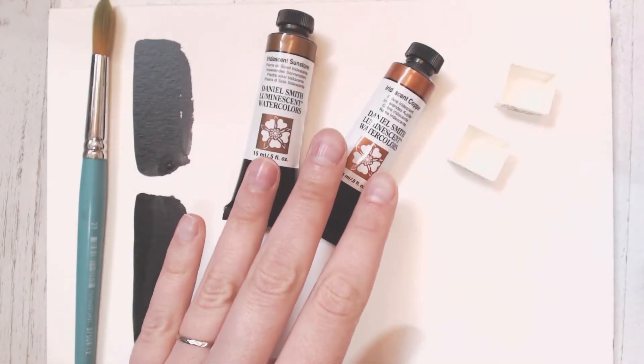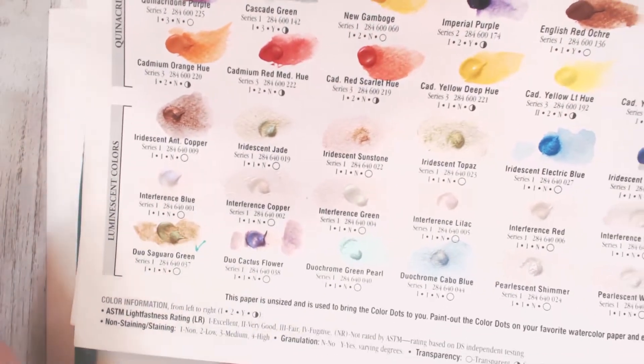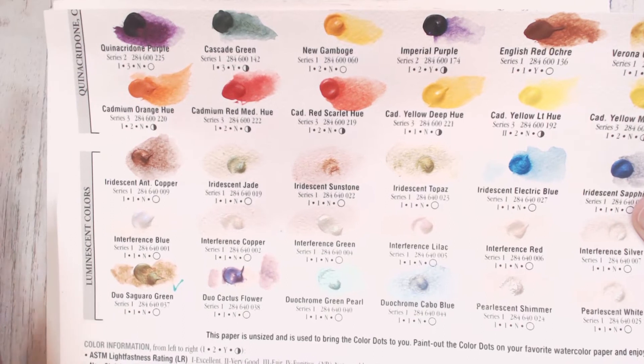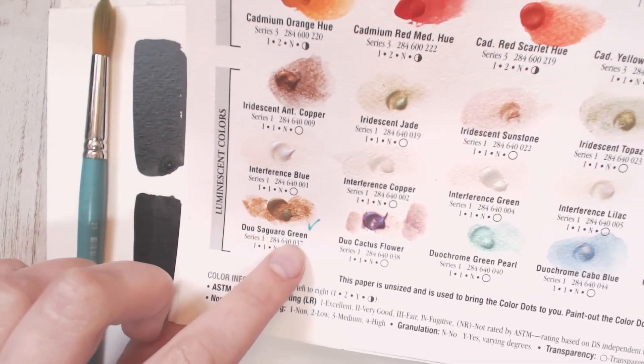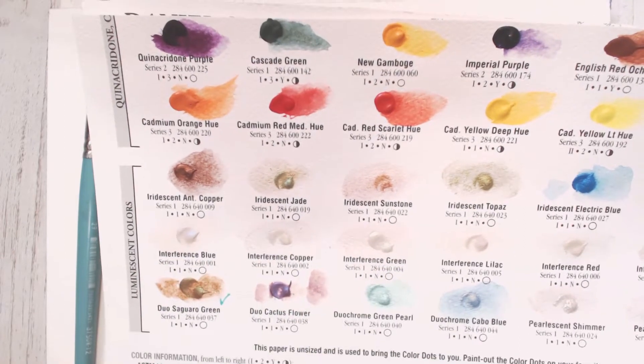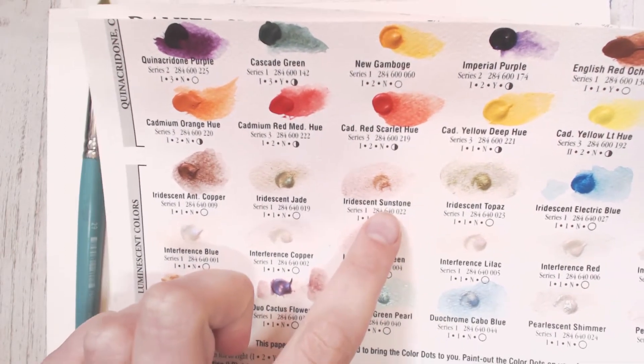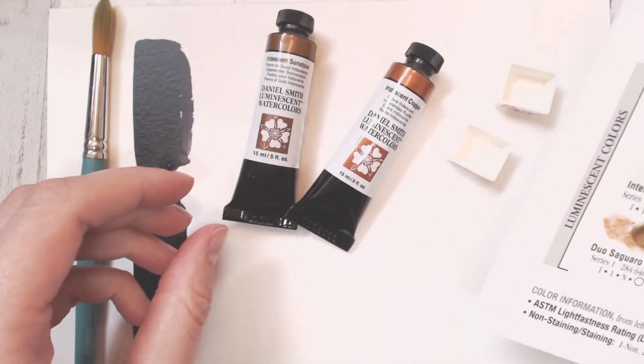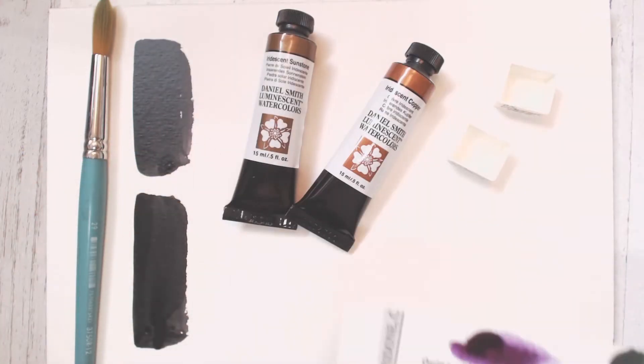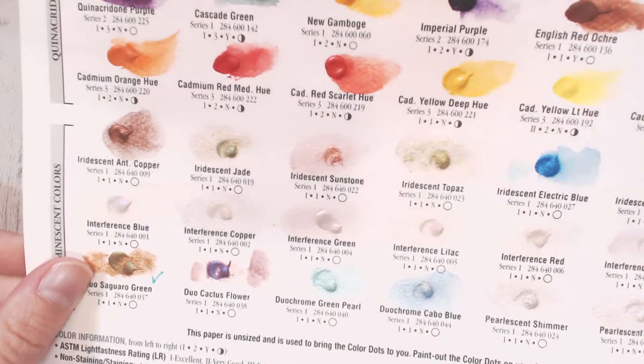For right now I'm going to focus on these two colors and they happen to be on this sample sheet that I got a while ago. You can see I have the duo saguro green right now but these two that I'm going to test out are the iridescent Sunstone and the iridescent copper.